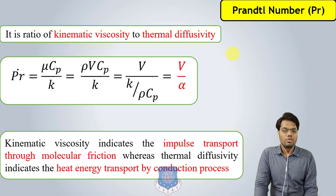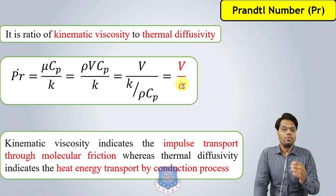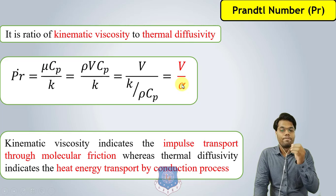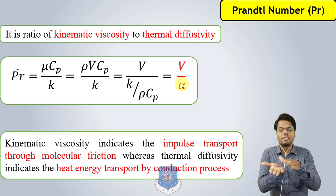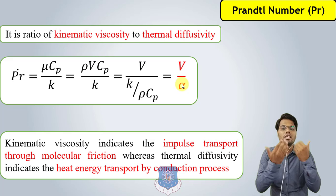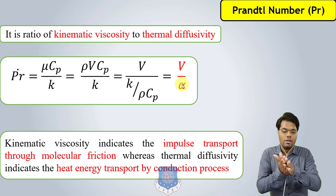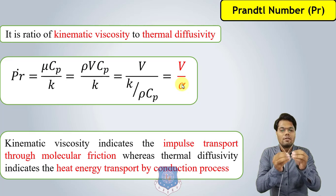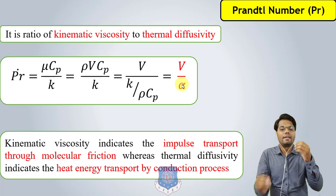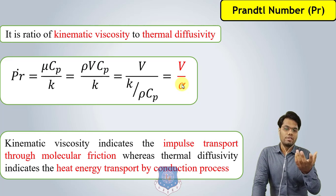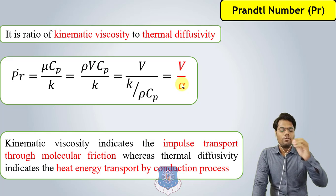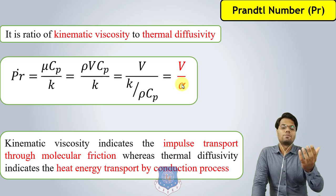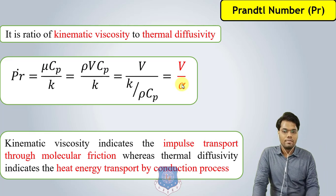The Prandtl number ν/α indicates: kinematic viscosity represents impulse transport through molecular friction, whereas thermal diffusivity indicates heat energy transported by the conduction process. If the value of the Prandtl number is higher, then more of the heat transfer from the fluid is due to impulse transport through molecular friction rather than conduction.